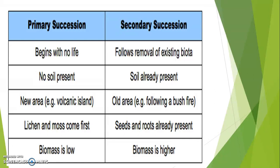Primary succession occurs in a new area, such as a volcanic island; secondary succession occurs in an old area, such as following a bush fire. In primary succession, lichens and moss come first; in secondary succession, seeds and roots are already present. Biomass is low in primary succession and high in secondary succession.